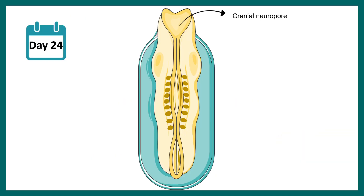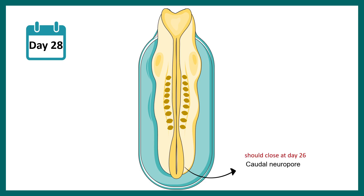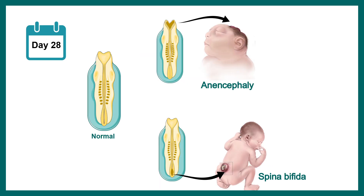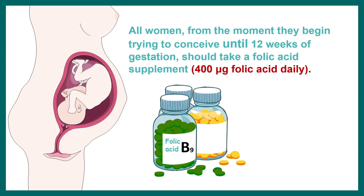The cranial neuropore closes around day 24 and the caudal neuropore closes around day 28 approximately. If this closure doesn't happen properly, it might lead to problems like anencephaly or spina bifida — both are neural tube defects which lead to severe defects in the nervous system. That is why every woman who wants to conceive should consider taking 400 micrograms of folic acid on a daily basis.